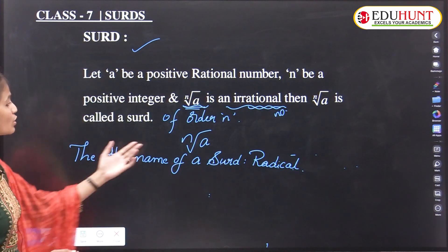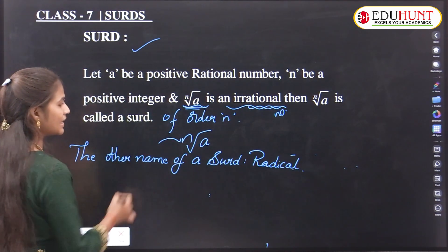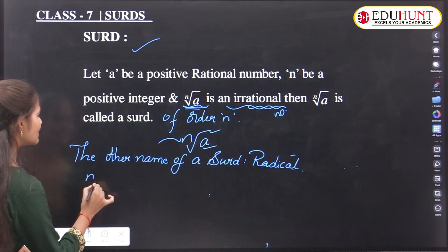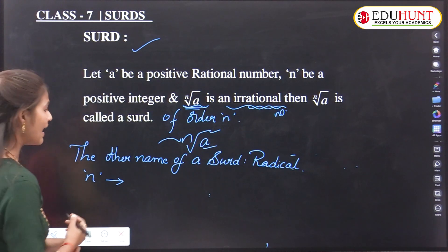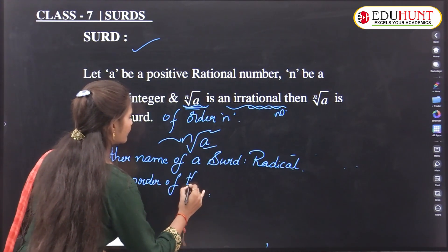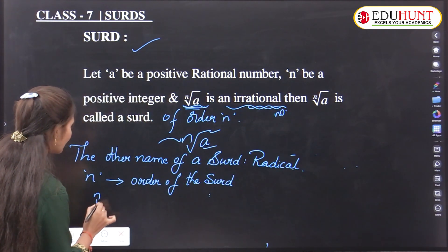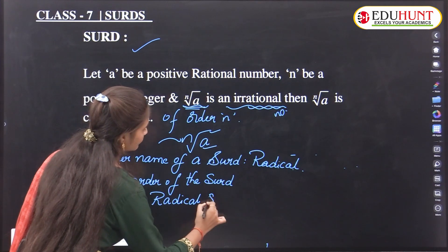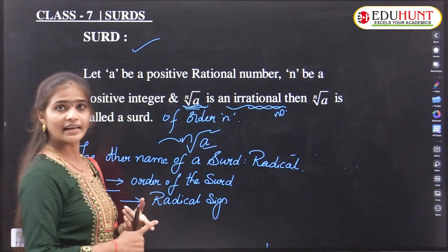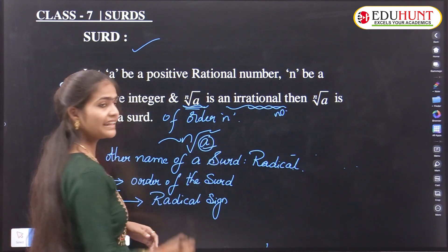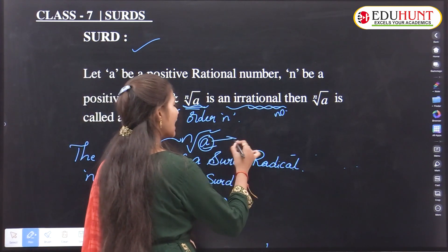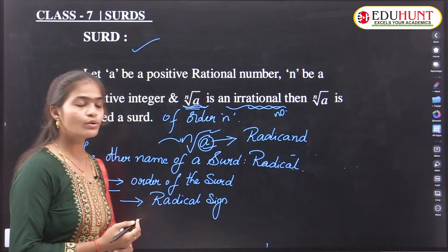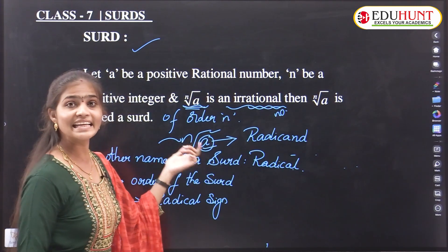A surd has several parts. Here, n is called the order of the surd. The symbol used is known as the radical sign. The number a under the root — at the place of a in nth root of a — we call that the radicand.